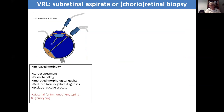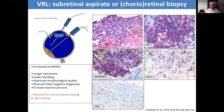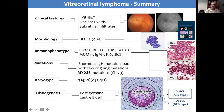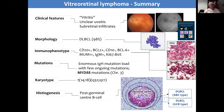Chorioretinal biopsies are undertaken in some centres, performed by experienced vitreoretinal surgeons where perhaps the vitrectomy wasn't sufficient to make a definitive diagnosis. The advantage of chorioretinal biopsies is that we receive more tissue and can analyse these tumour cells in more detail. In this way, we've been able to better understand their genetic background and any chromosomal translocations which may be present. To summarise, vitreoretinal lymphoma is a high-grade B-cell lymphoma.